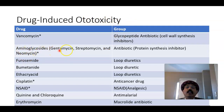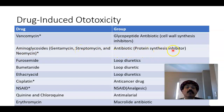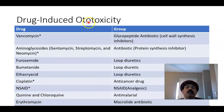Aminoglycosides — such as gentamicin, streptomycin, neomycin, kanamycin, and tobramycin — are antibiotics and protein synthesis inhibitors. Their adverse effect or side effect is ototoxicity, meaning damage to the inner ear.